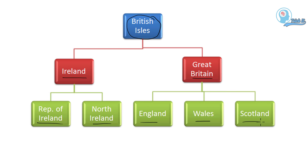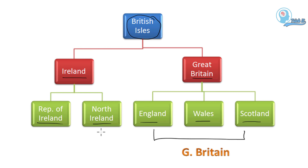Coming to Great Britain, it consists of three countries: England, Wales and Scotland. These three countries together form Great Britain. But when we combine Northern Ireland with England, then it forms United Kingdom. So that's all about this video. Thank you for watching. Bye-bye.